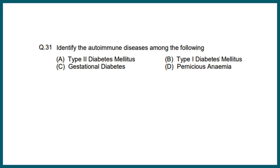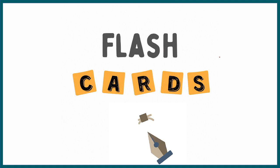IIT JAM 2016 question 31 asked: identify the autoimmune diseases among the following. This confirms that questions are asked based on diseases, so diseases associated with the immune system are an important question type.